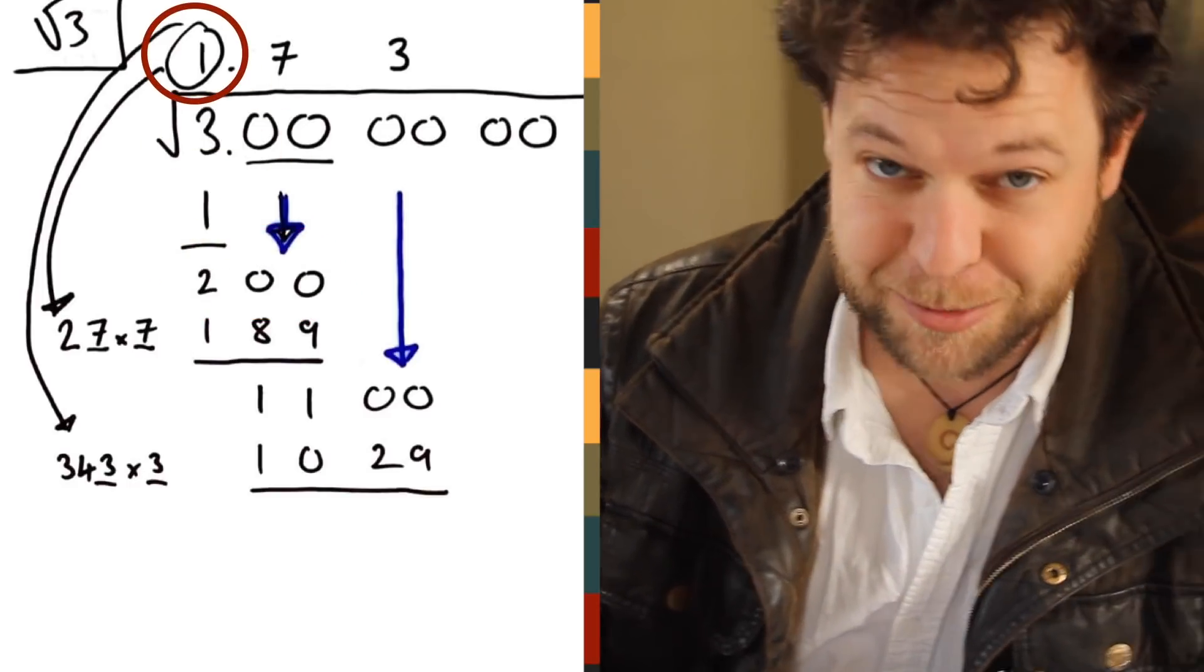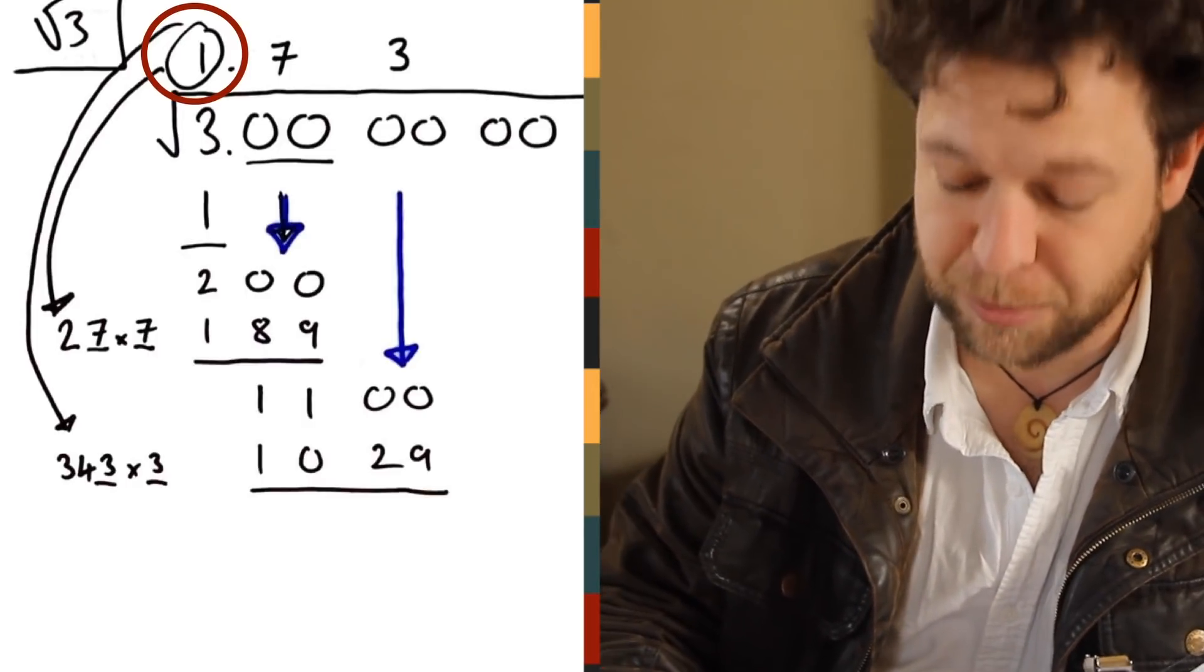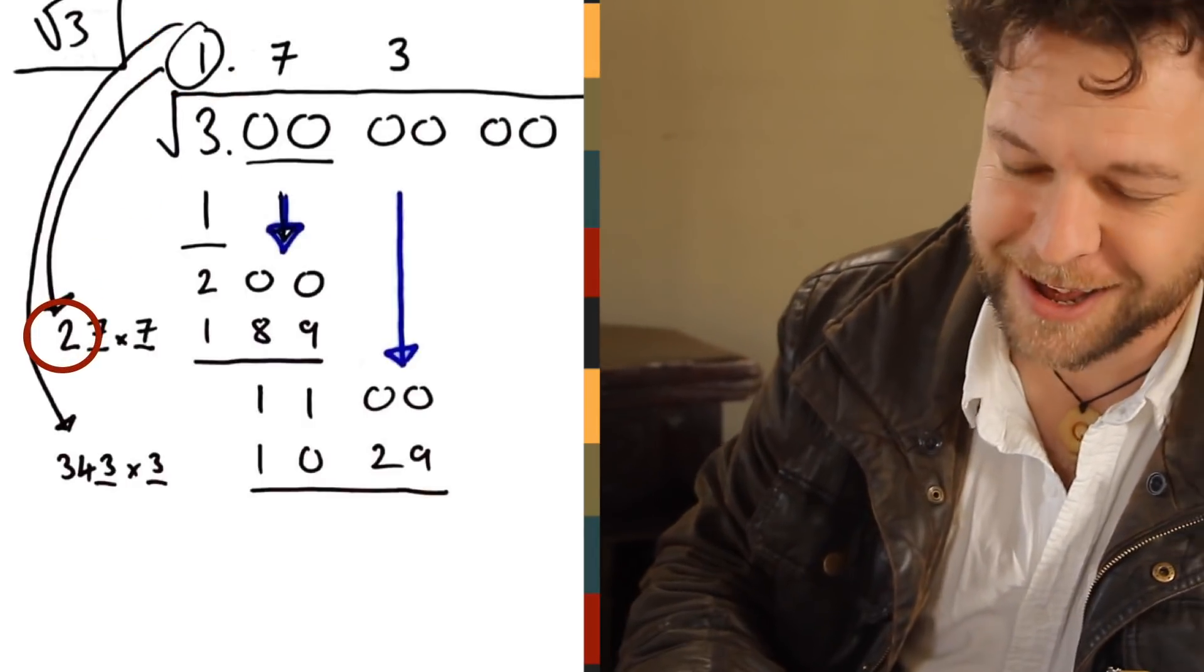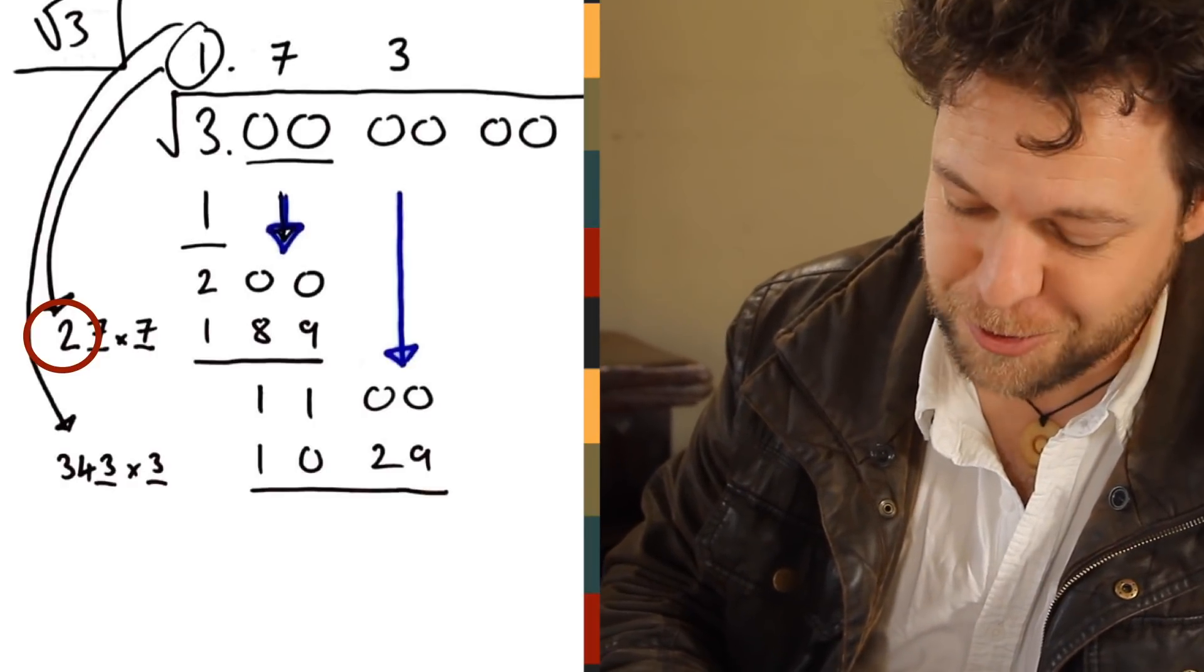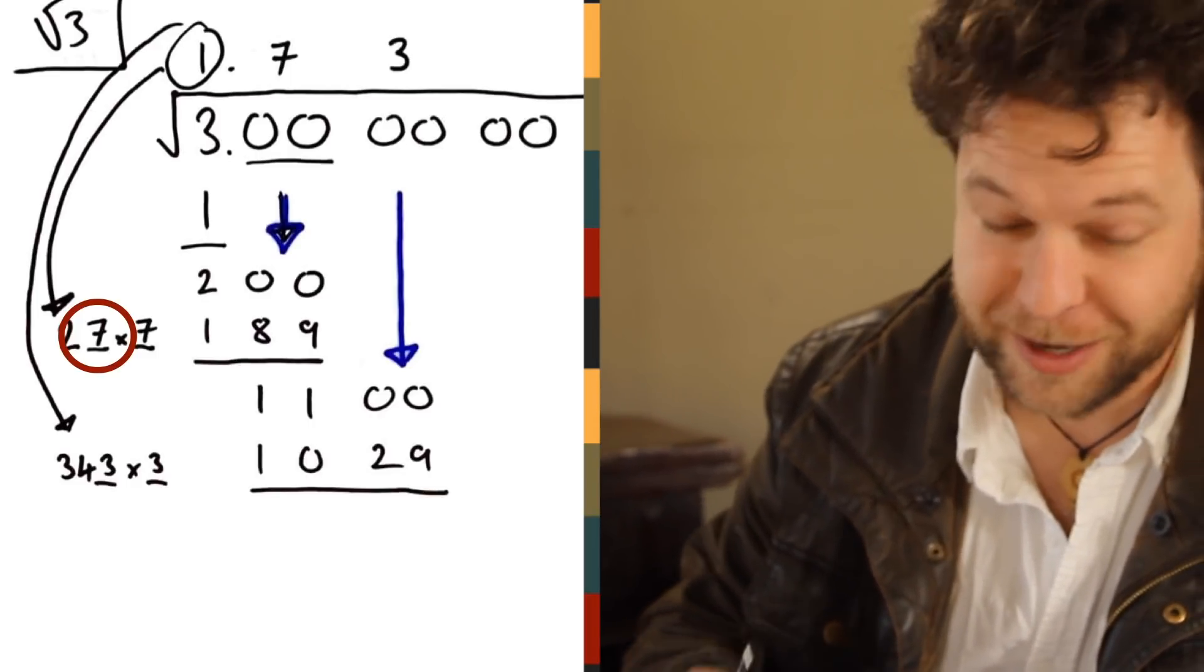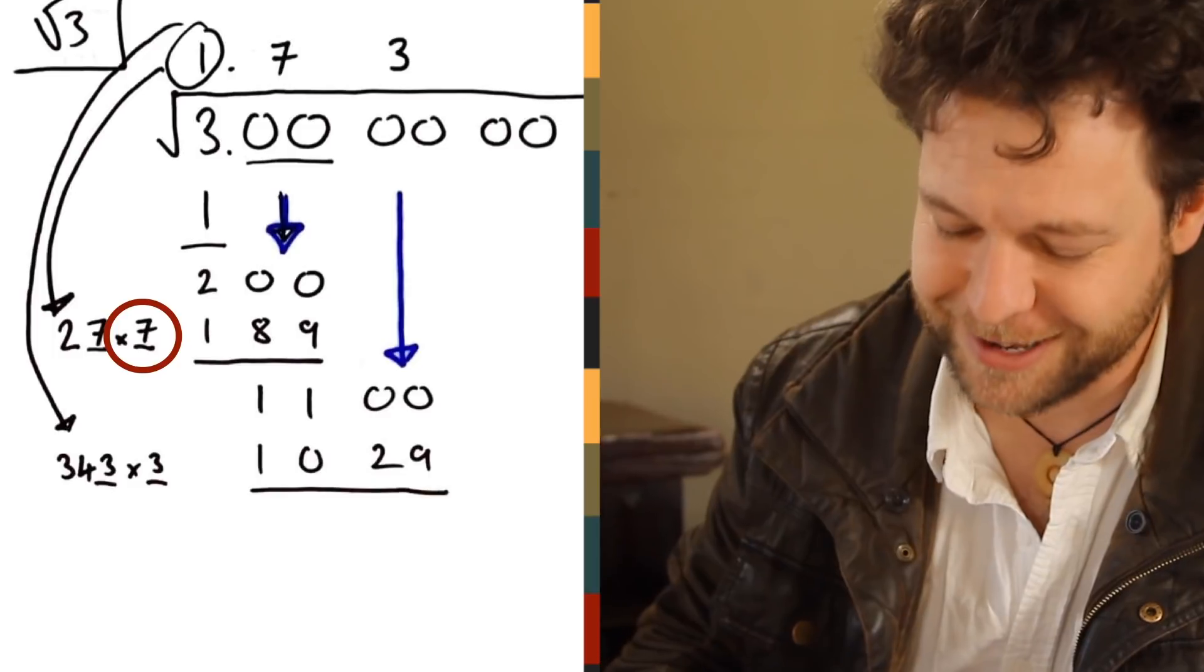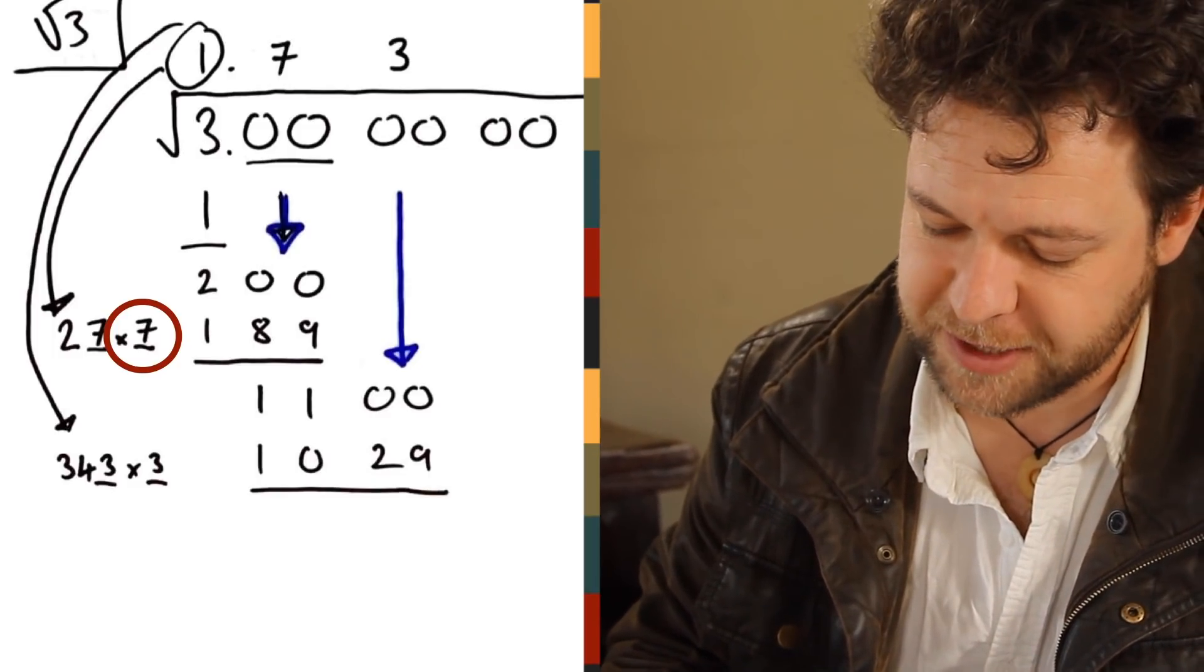You go and grab the digit you just wrote down as part of your answer, which in our case is 1. You double it, and you write it down here, and you put another digit after it. So I wrote down a 2, and then leave a space for another digit. I need to figure out what digit will fill in that space, and also get multiplied by the two-digit number I've just made, to create a number which fits into my remainder.